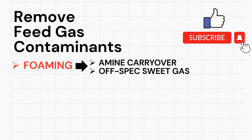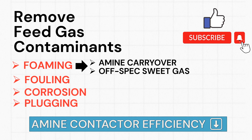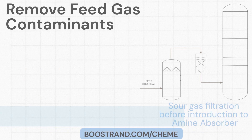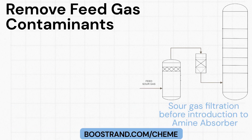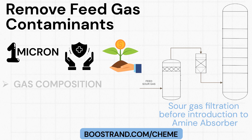In addition, contaminants can lead to fouling, corrosion, and plugging issues that reduce the efficiency of the amine contactor. That's why filters removing small particulates up to 1 micron are used for most applications to prevent operational problems while balancing filtration costs. The optimal filter rating depends on the gas composition and system design.